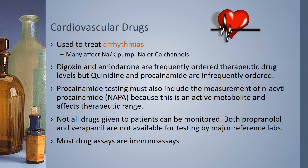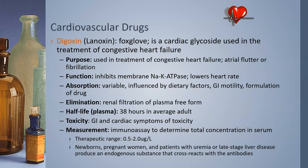Digoxin and amiodarone are frequently ordered therapeutic drug levels, but quinidine and procainamide are infrequently ordered. Procainamide testing must include the measurement of N-acetyl-procainamide, also known as NAPA, because this is an active metabolite and will affect the therapeutic range. Not all drugs given to patients can be monitored — both propranolol and verapamil are not available for testing by major reference labs. Most drug assays for cardiovascular drugs are a type of immunoassay.